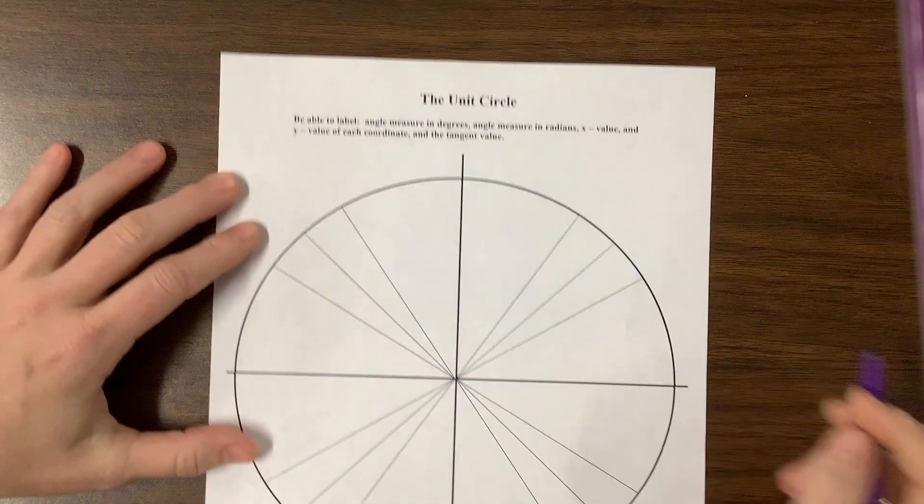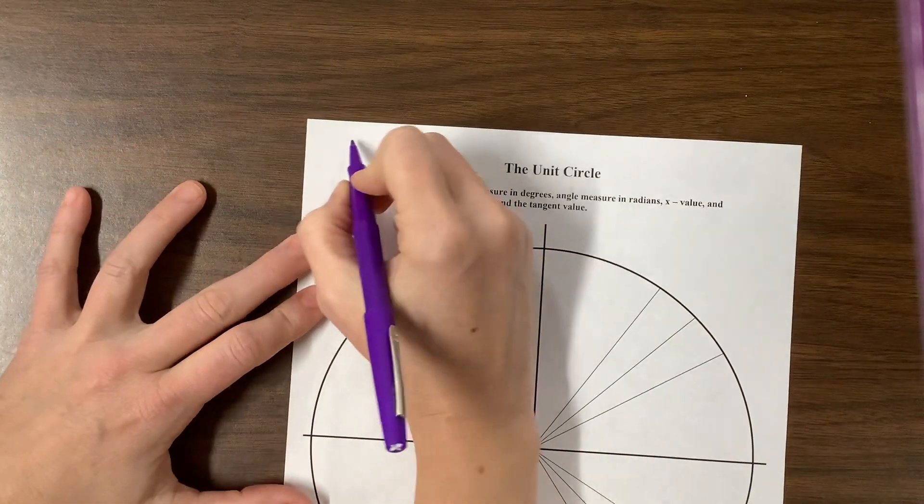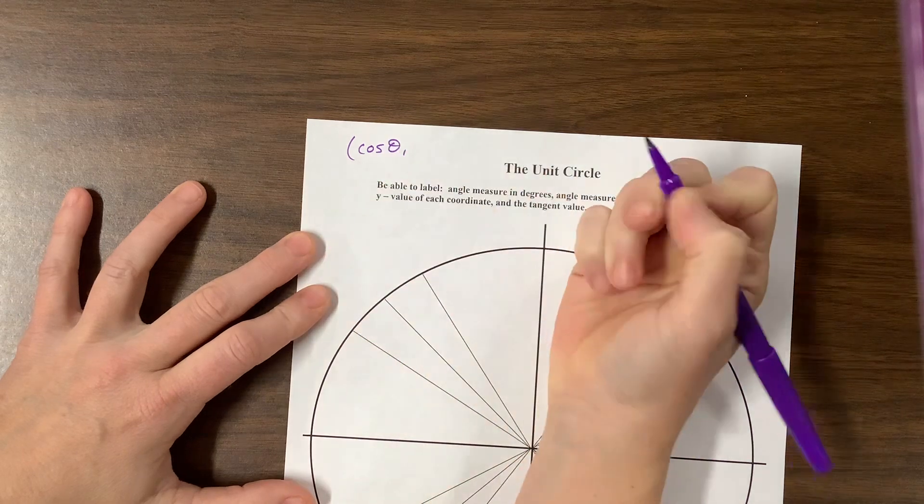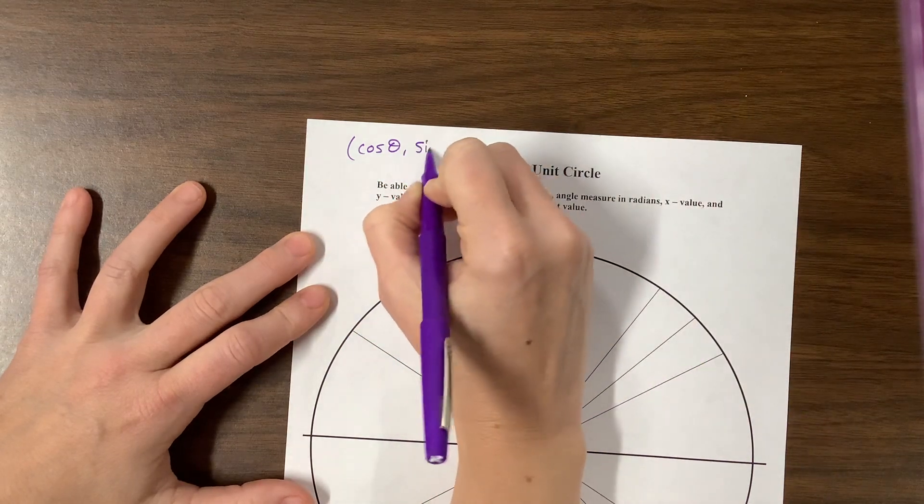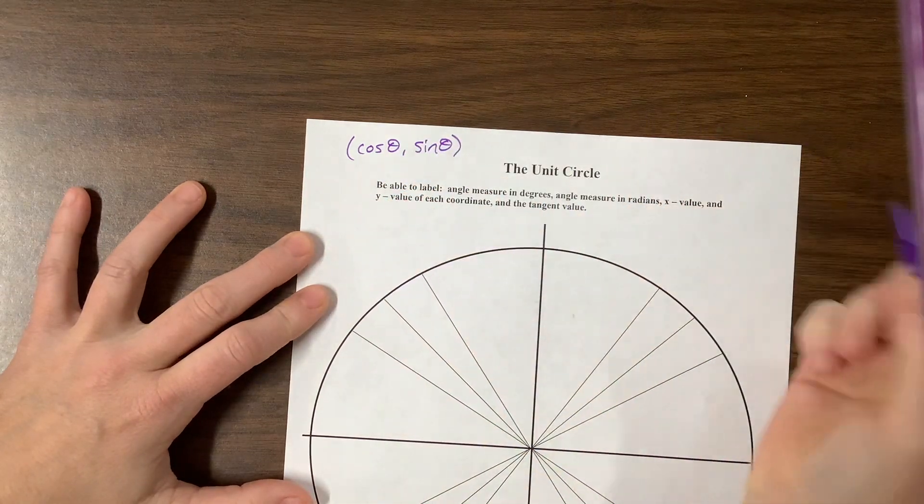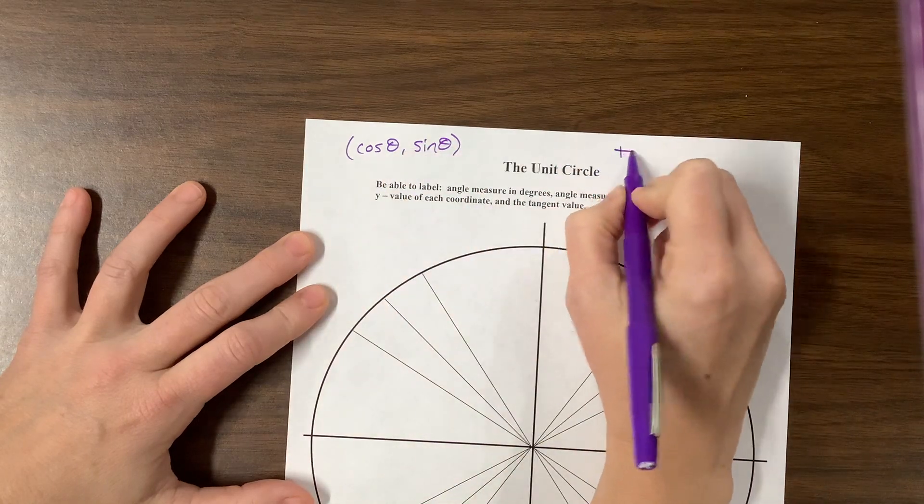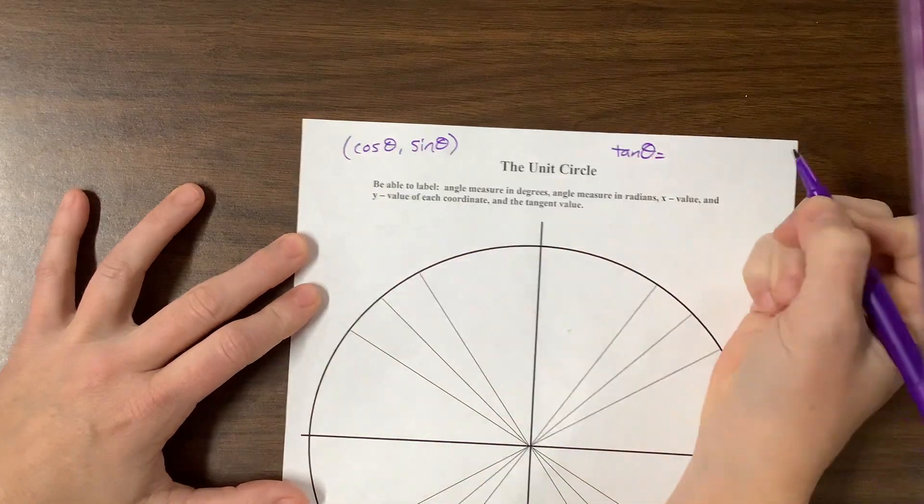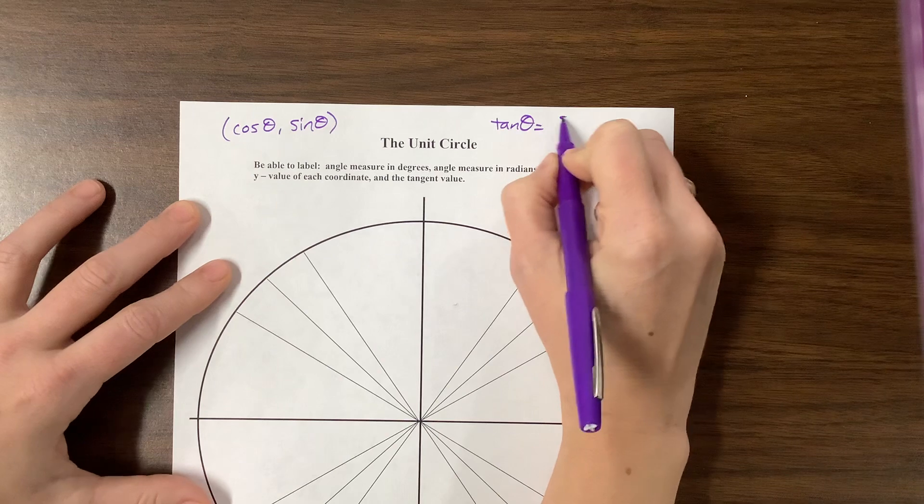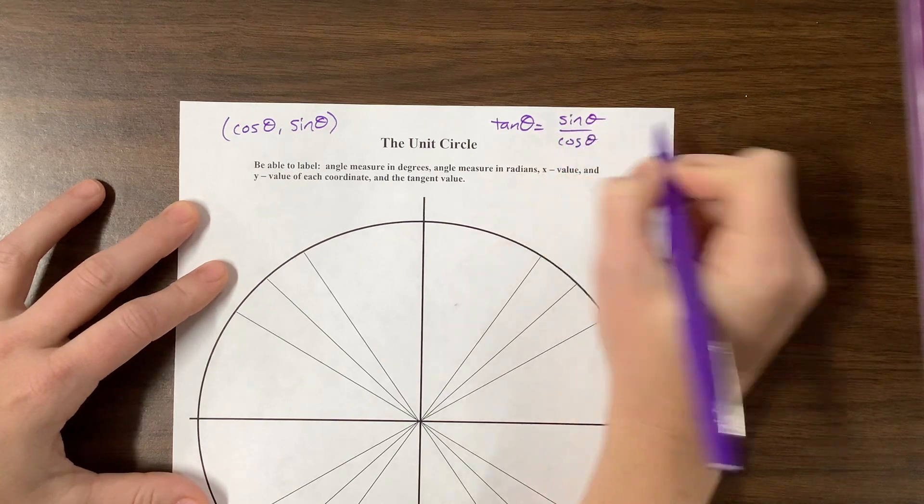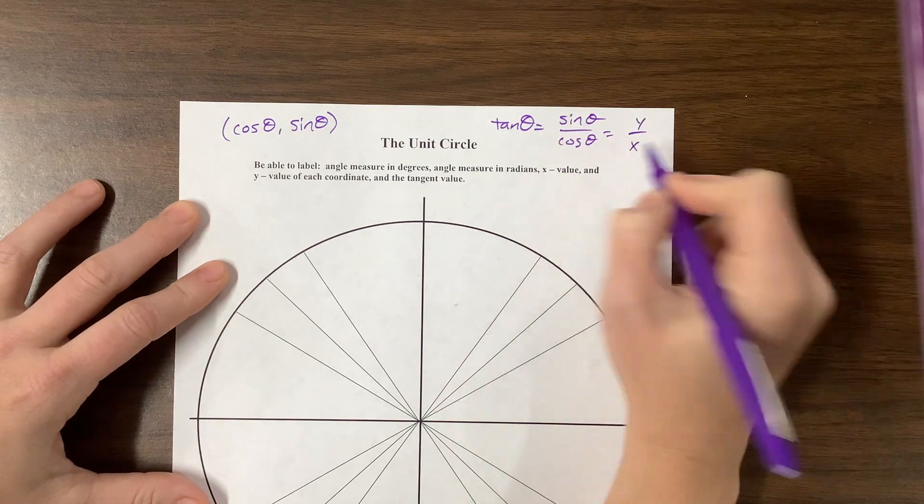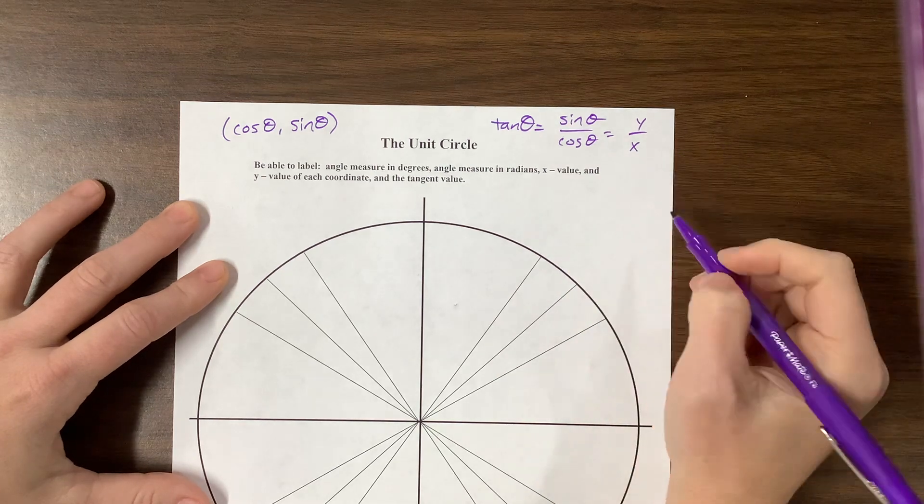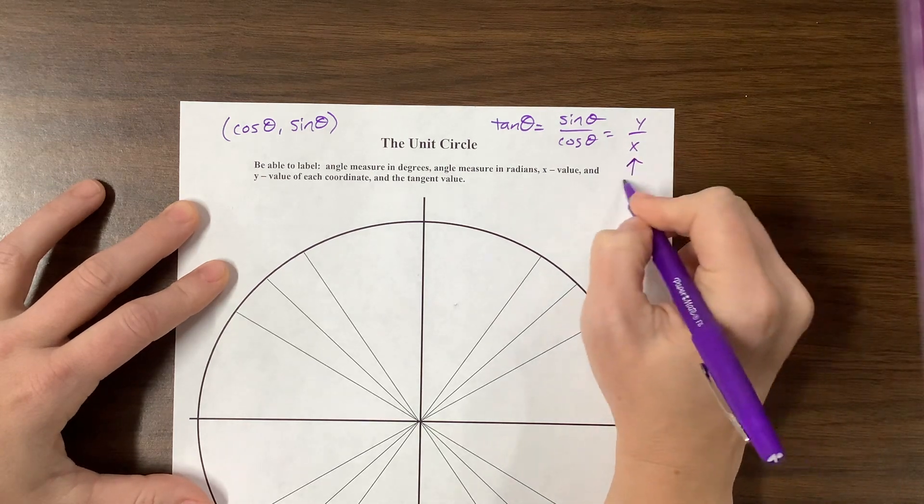If you remember, on the unit circle, we care about the unit circle because its x value is cosine of the angle, and its y value is sine of the angle. And therefore, its tangent value is going to be equal to sine over cosine, which is the y value over the x value. And anytime you see y over x, you should think, automatically, slope.